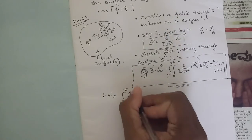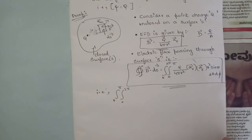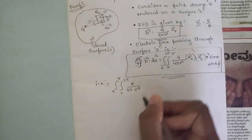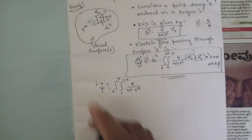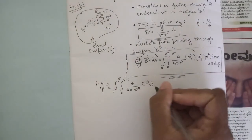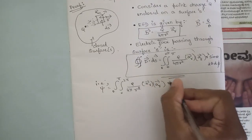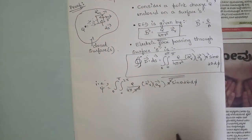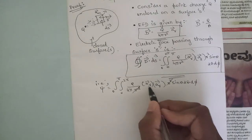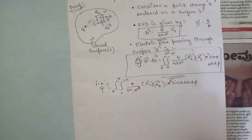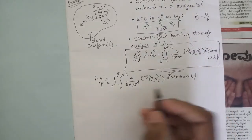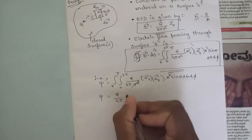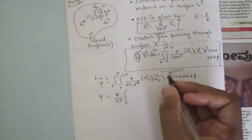Now we further solve this equation. Taking the integral from 0 to π and 0 to 2π, psi equals Q divided by 4πr² times ar vector, times r² sinθ dθ dφ. Here r² and r² cancel, and the dot product of ar vector with ar vector equals 1.